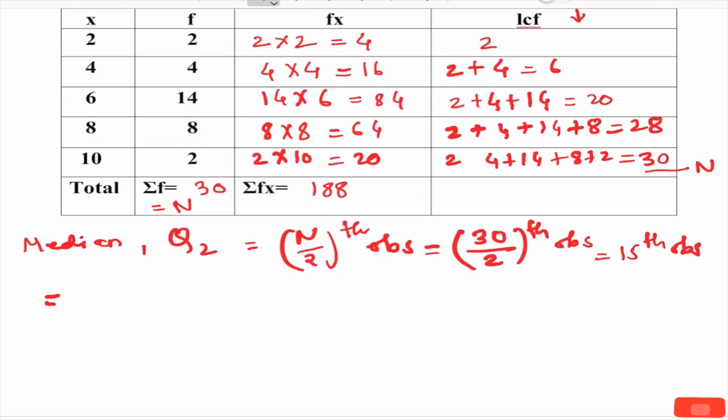We know how to find 15th observation. The observation for which LCF equals or exceeds N by 2, that is 15, for the first time. Here I am circling, we can see LCF exceeds 15 for the first time. If we had LCF equal to 15 we would take corresponding observation. But now here LCF is not equal to 15.